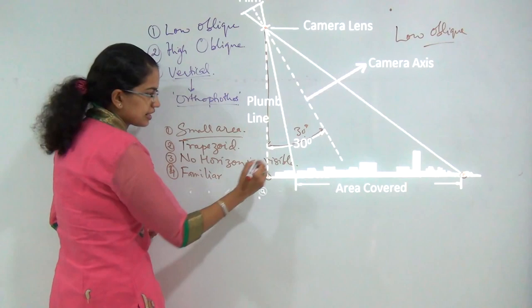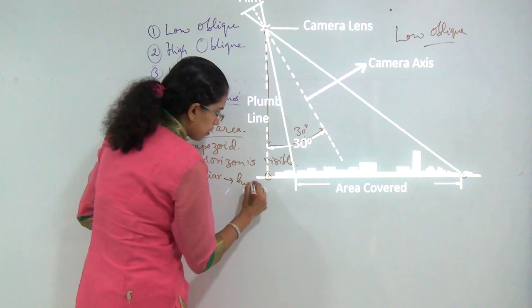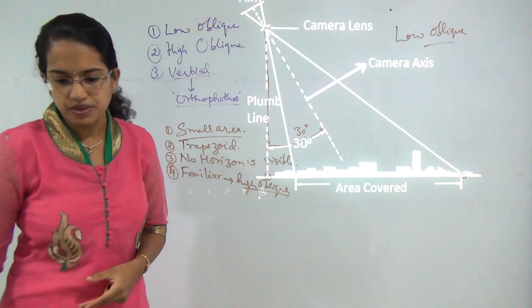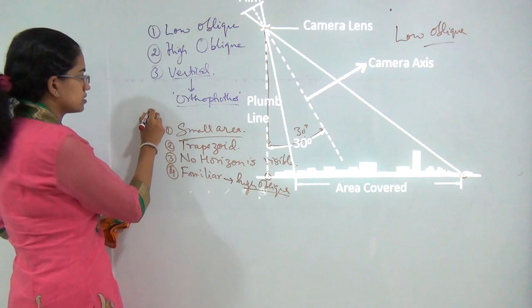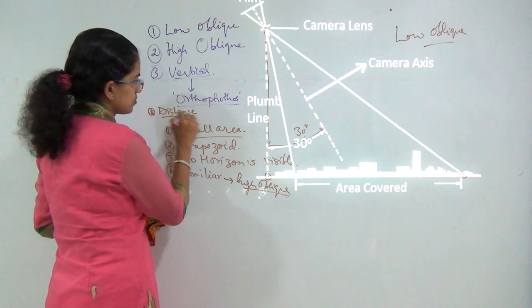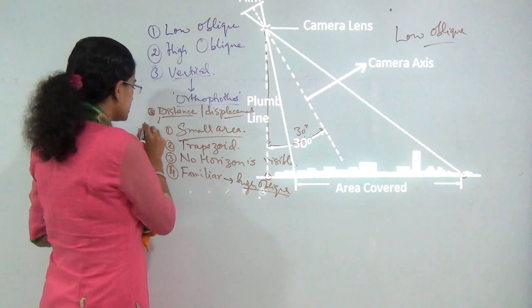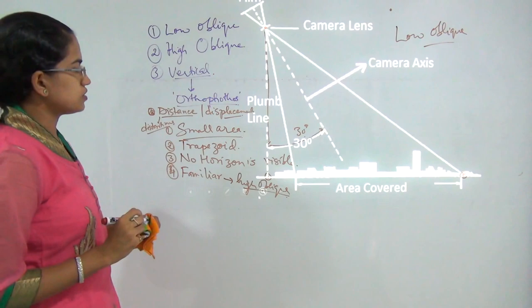Under both low oblique and high oblique photographs, you get a familiar view of the terrain. However, under a low oblique photograph, no horizon is visible. There are also distance distortions and displacement, meaning you cannot always accurately measure distances from the image.